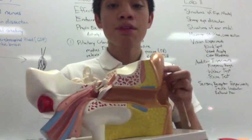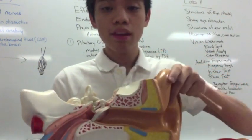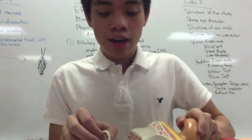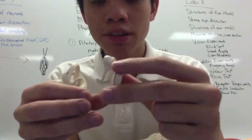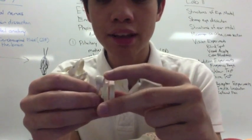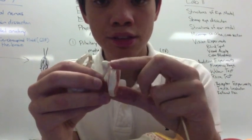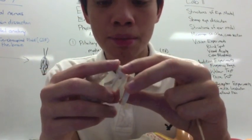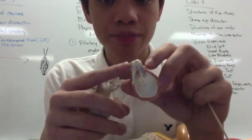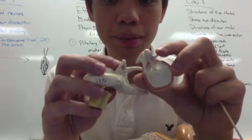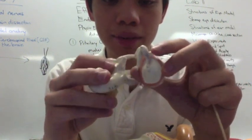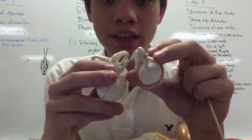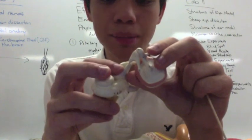Then you have your middle ear, which is this section right here, which is composed of three bones. You first have your malleus, which connects to your tympanic membrane. Your malleus then connects to your incus. And then you have your stapes. So: malleus, incus, then stapes.